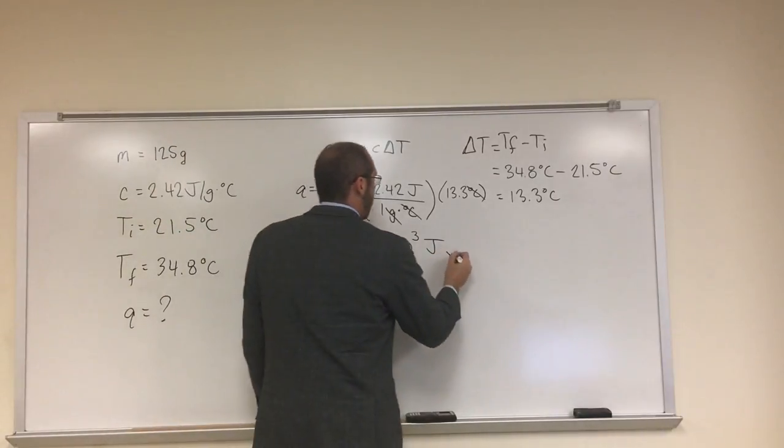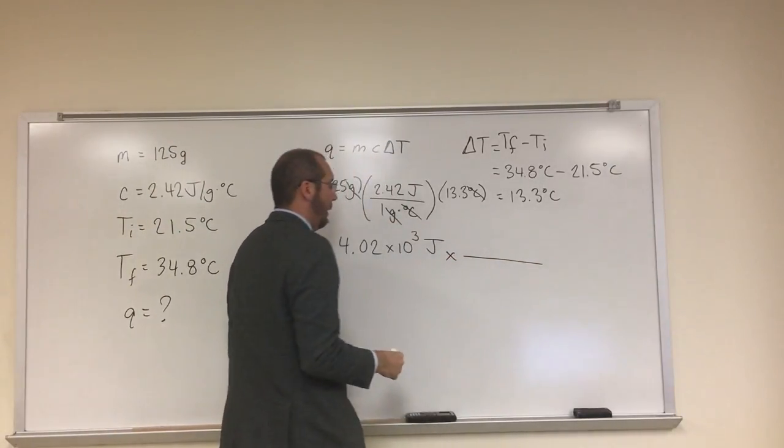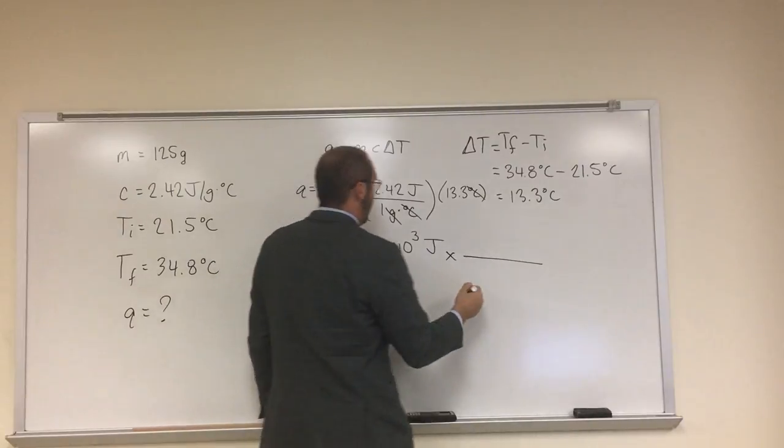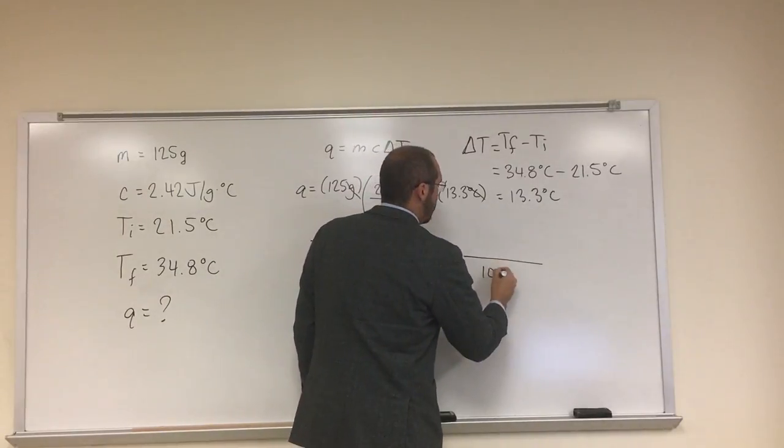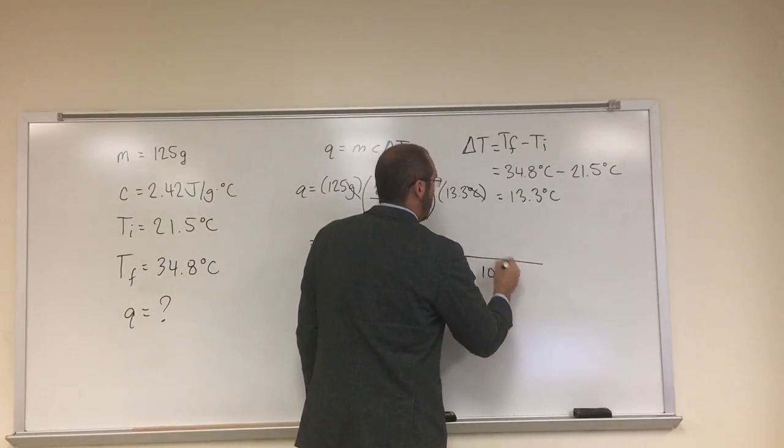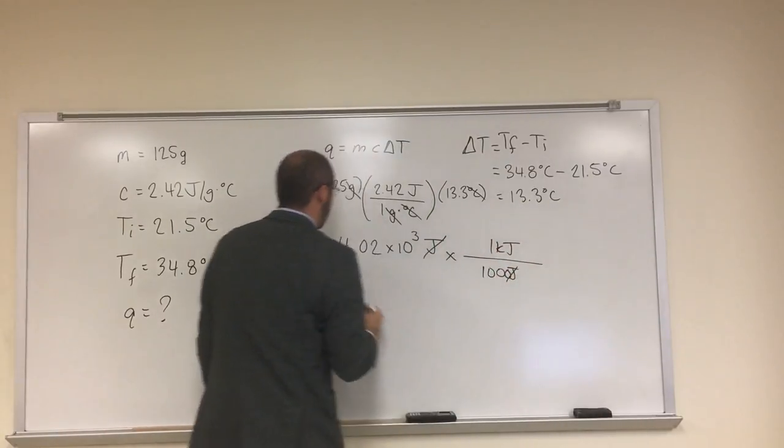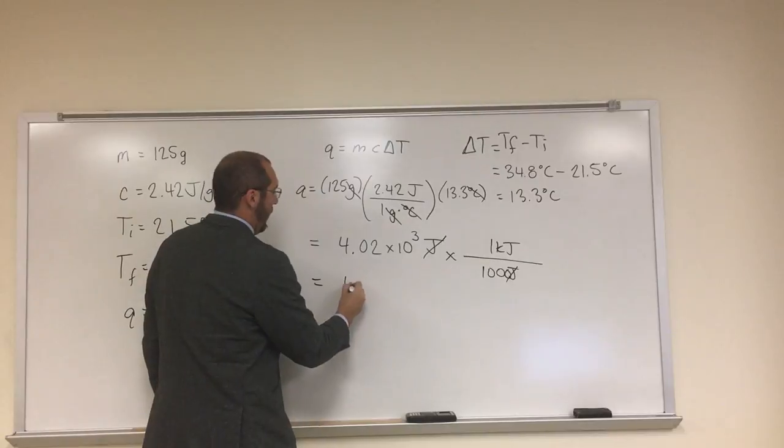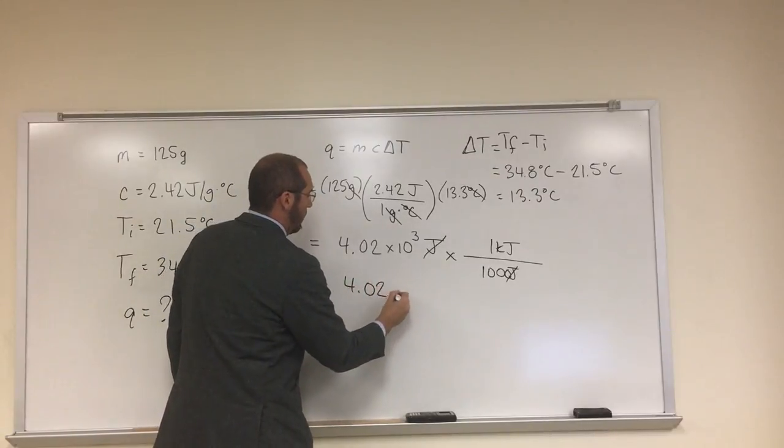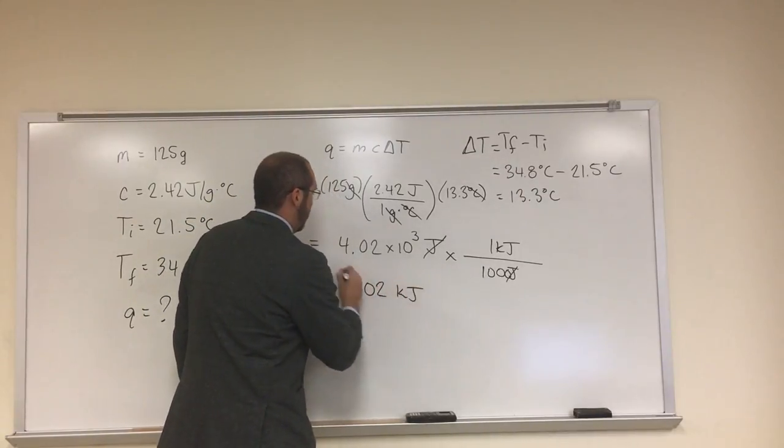So in order to do that and give you a better, more manageable number, for every 1000 joules, that's one kilojoule. So the units cancel. So what are we going to have? 4.02 kilojoules.